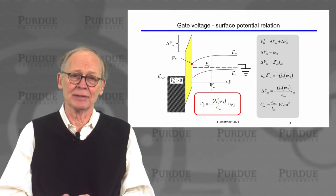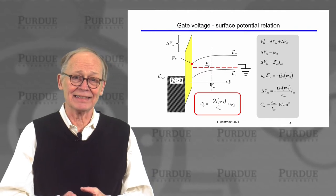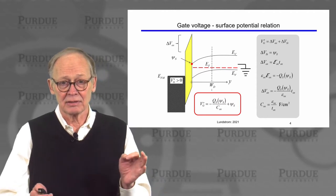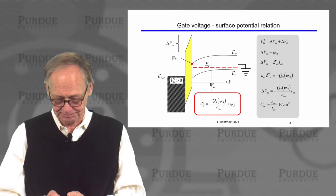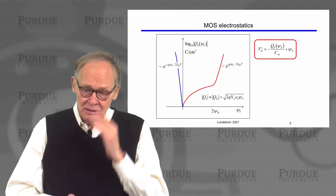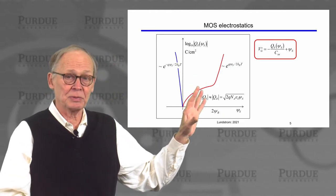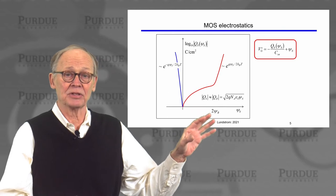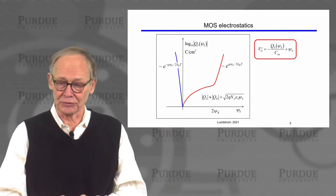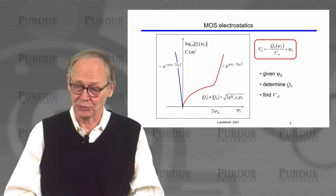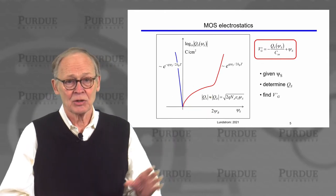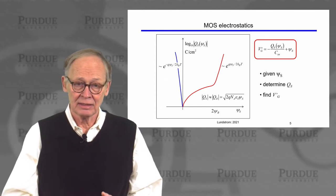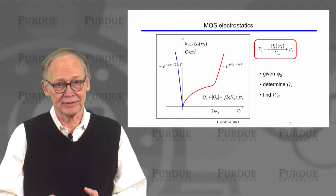Vg' — this is just to remind us we're talking about an ideal structure, a structure in which when we apply Vg' equals zero, the semiconductor is under flat band conditions. So we've discussed how the surface potential is related to the charge in the semiconductor. Now we know how to deduce the gate voltage that produced that surface potential. Given a surface potential, we can determine the charge in coulombs per square centimeter in the semiconductor, and then determine the gate voltage that produced it.